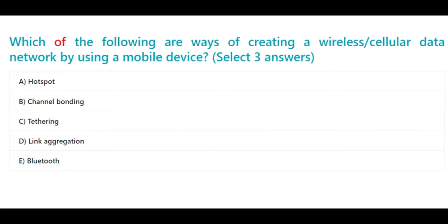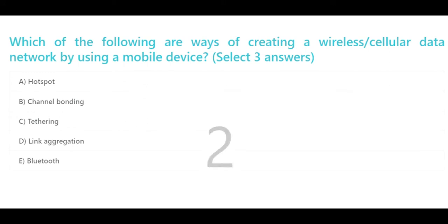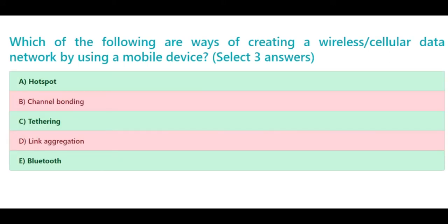Which of the following are ways of creating a wireless/cellular data network by using a mobile device? Select three answers: a. Hotspot, b. Channel bonding, c. Tethering, d. Link aggregation, e. Bluetooth. The correct answers are a. Hotspot, c. Tethering, and e. Bluetooth.